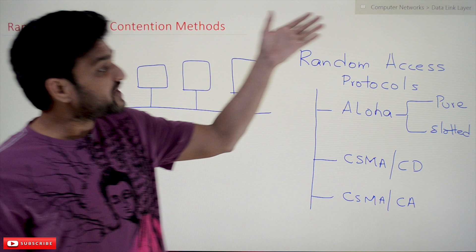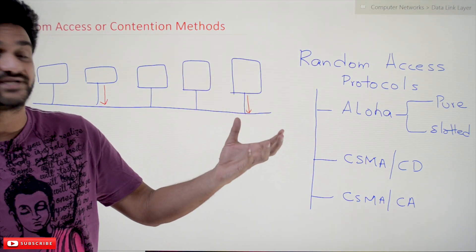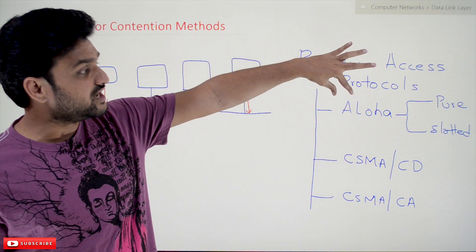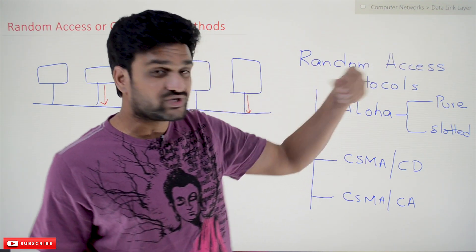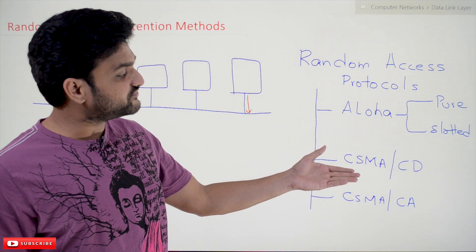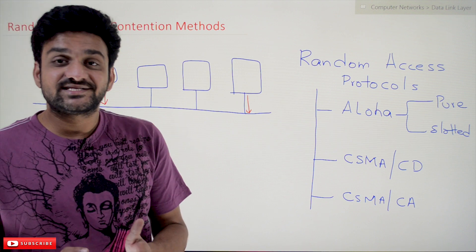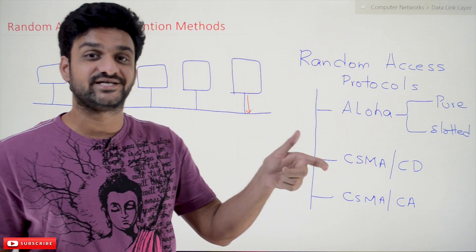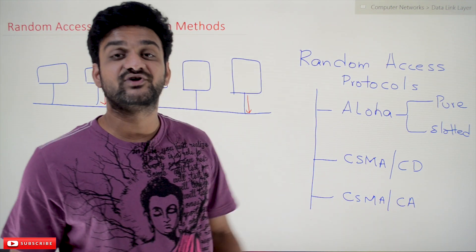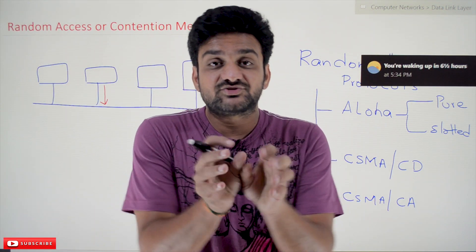To understand how random access can be provided efficiently, we have different types of protocols. The concept of random access started with ALOHA, which is divided into two types: Pure ALOHA and Slotted ALOHA. After that we have CSMA/CD — Carrier Sense Multiple Access with Collision Detection — and CSMA/CA — Carrier Sense Multiple Access with Collision Avoidance. These are the different protocols for random access of the shared medium.